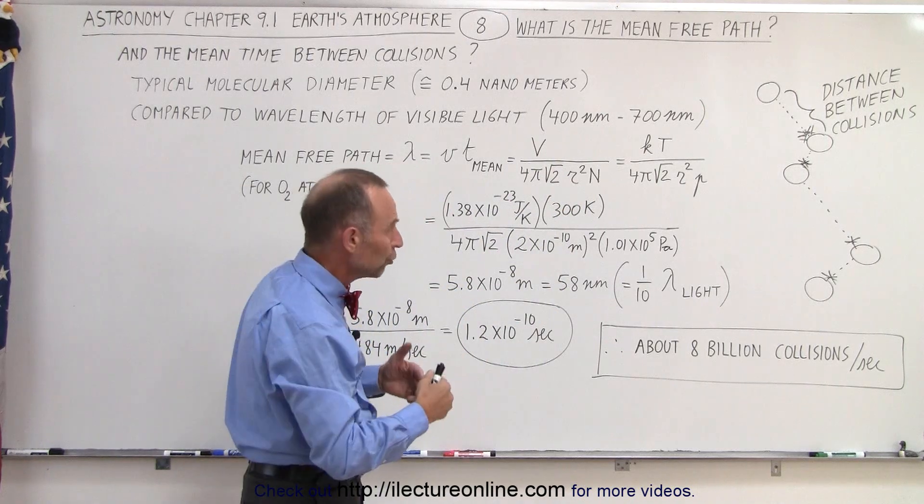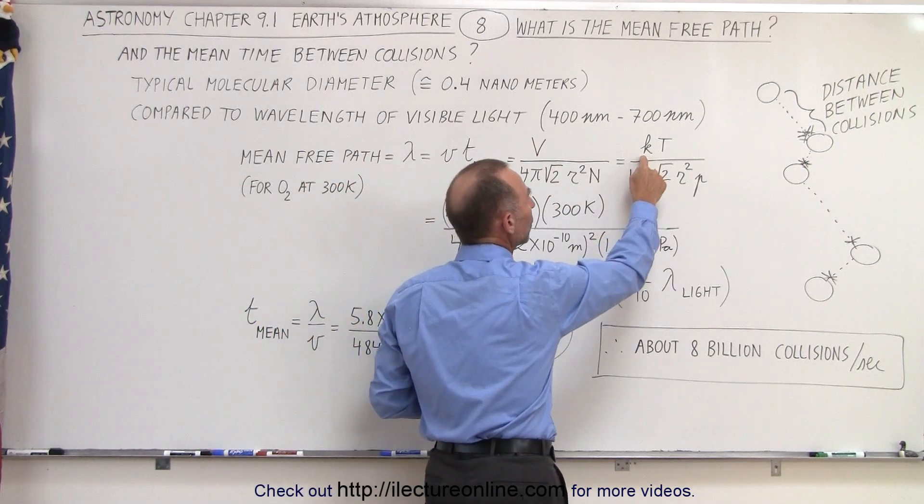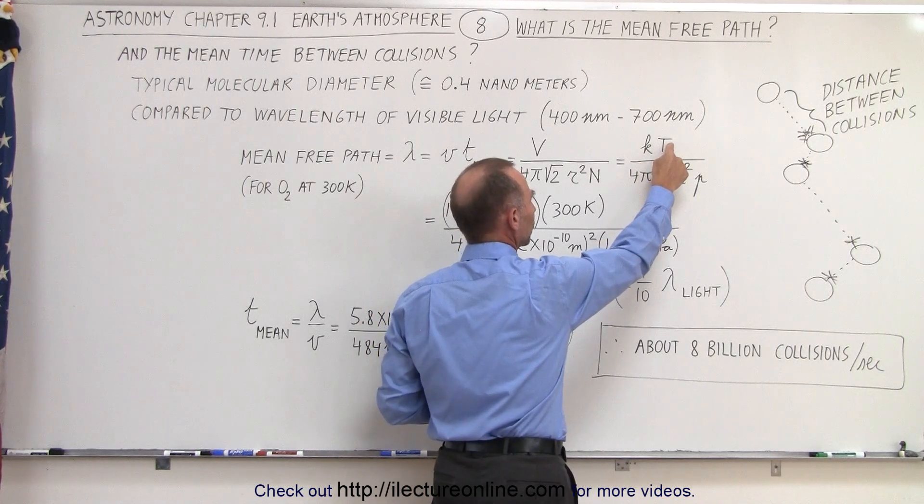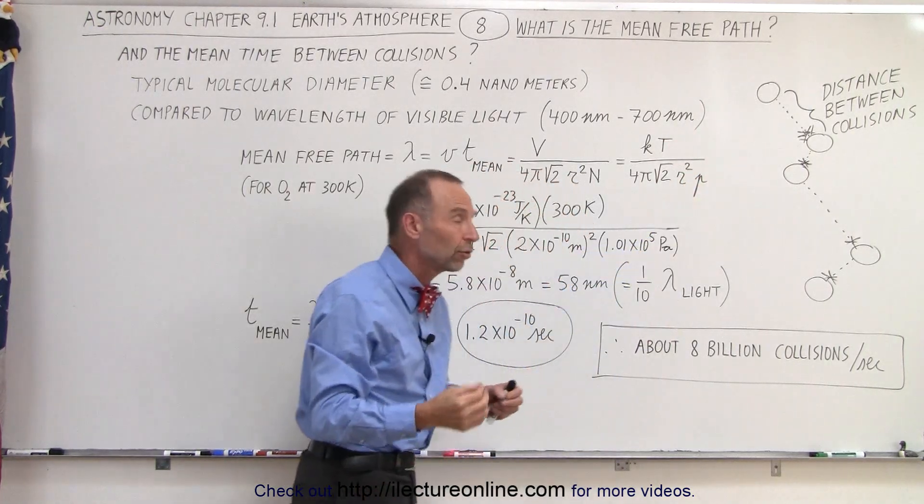That can be converted using the ideal gas equation, by taking the constant K, which is the gas constant, divided by Avogadro's number, times the temperature of the gas, times the pressure of the gas, r still being the radius of the molecule.